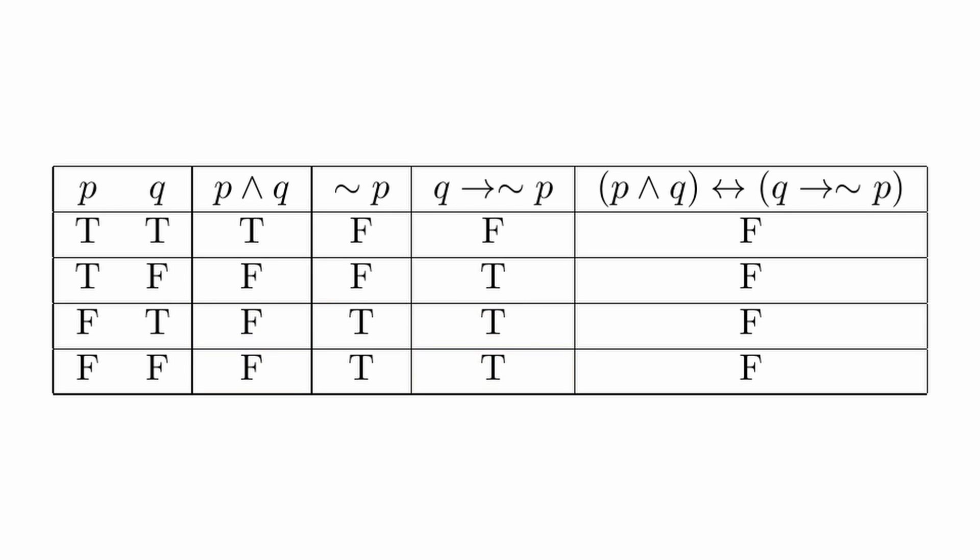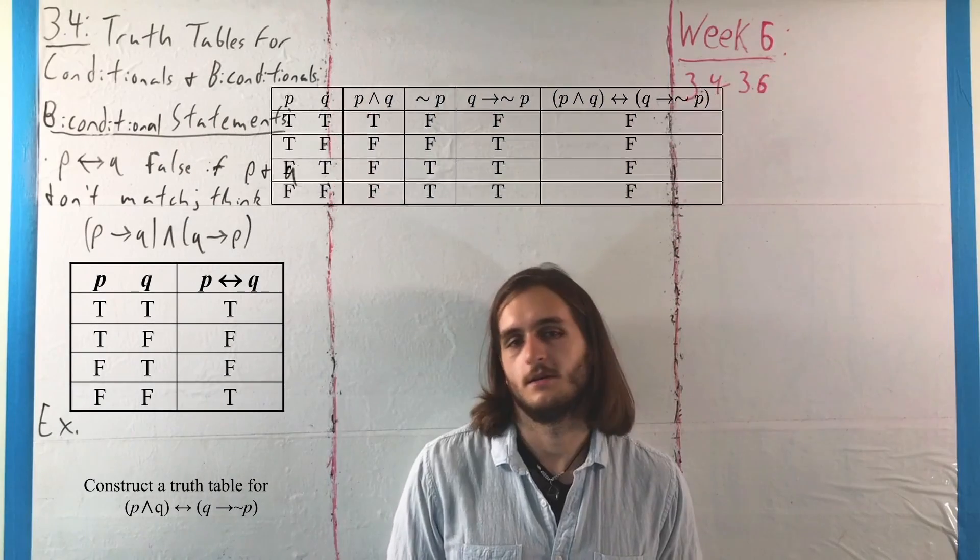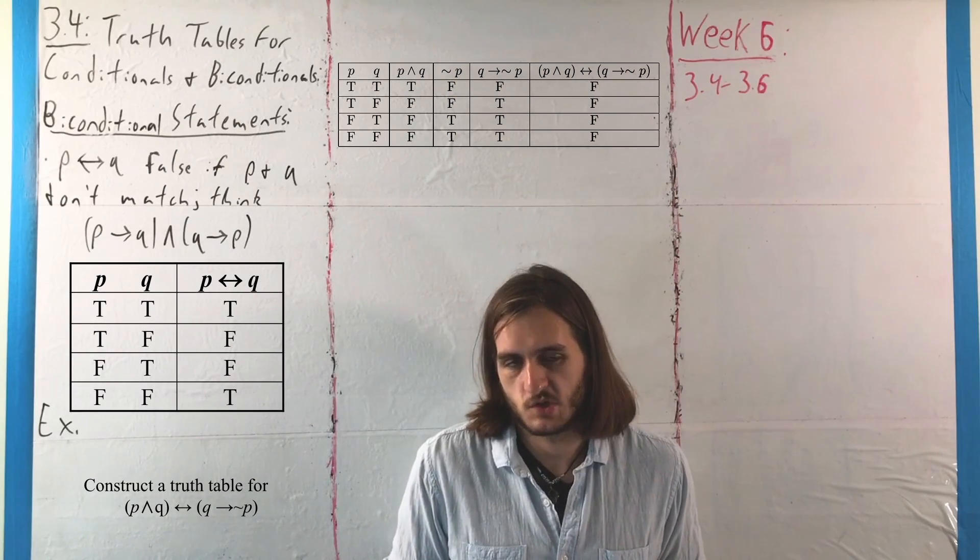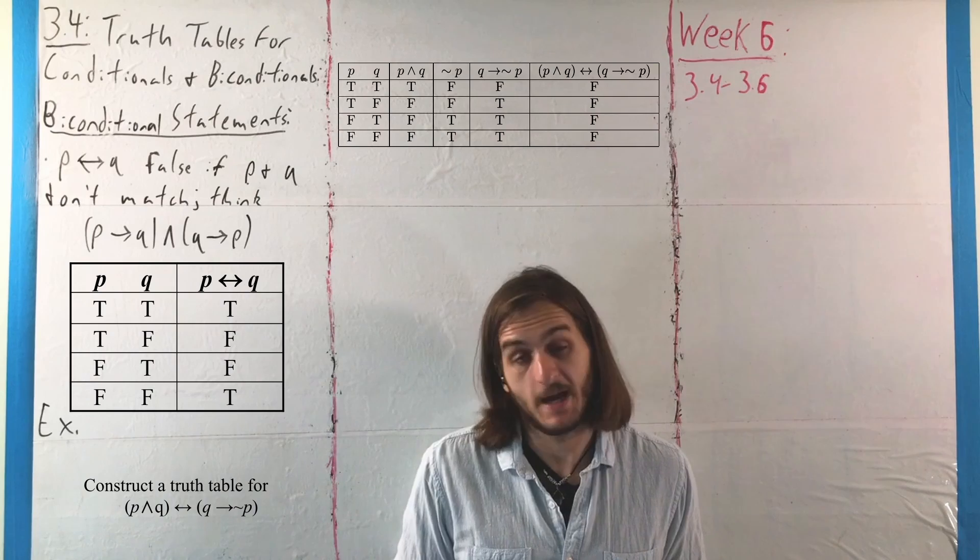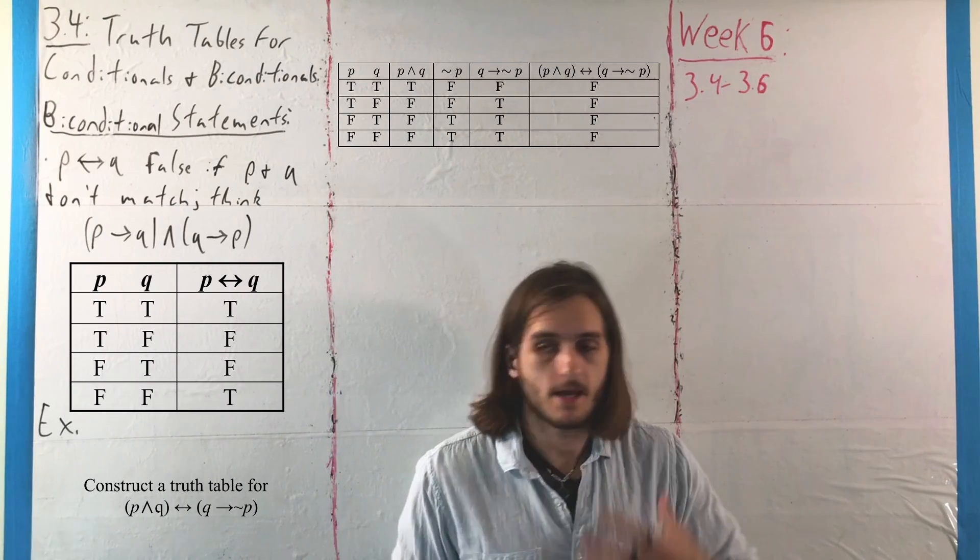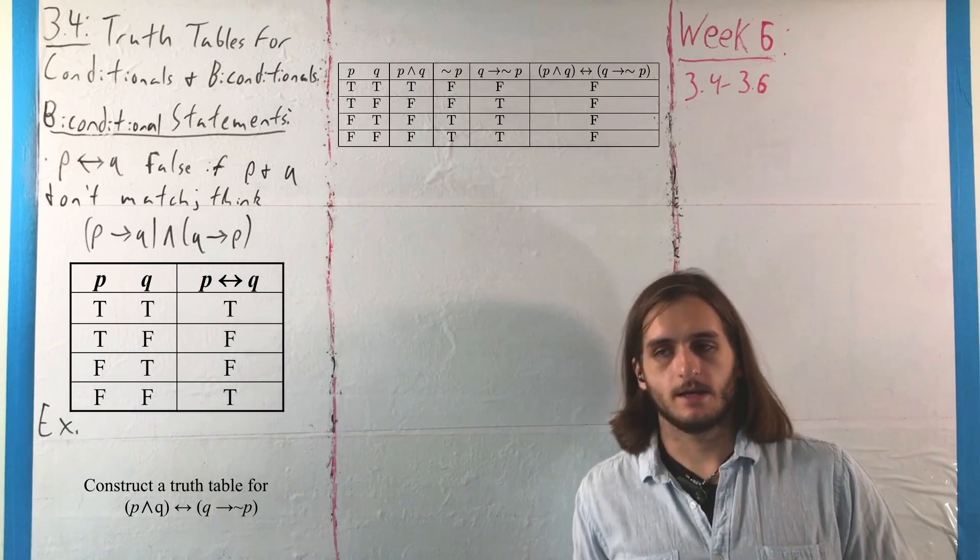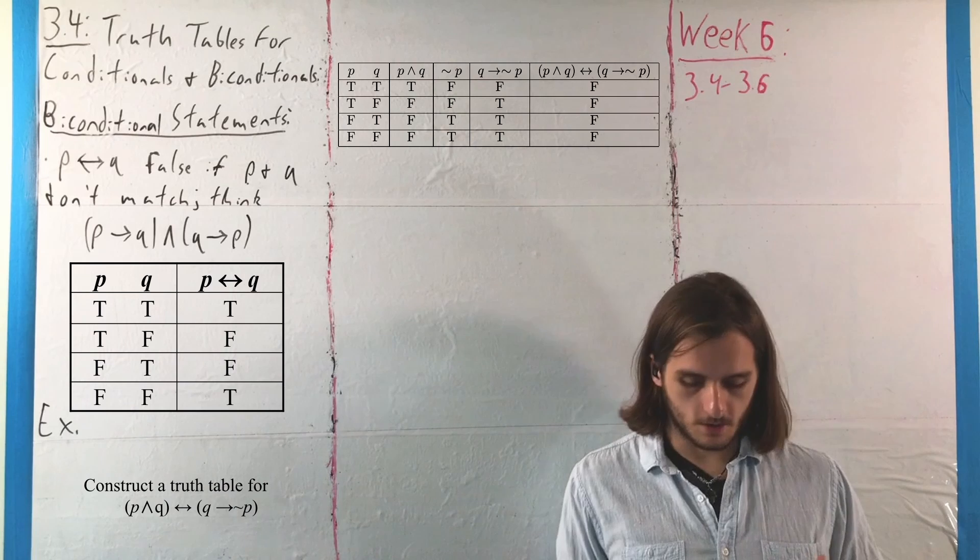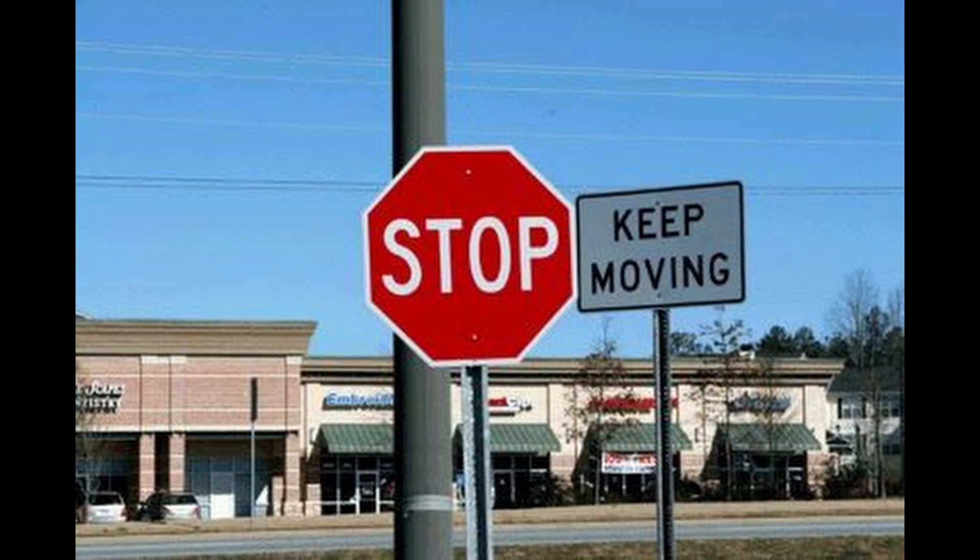So, because we need things to match in order for them to be true with a conditional statement, well, this conditional is unfortunately always false, bi-conditional, to be clear. And this, as I mentioned in the last section, is an example of a thing called a contradiction. It's a thing that cannot possibly be true.